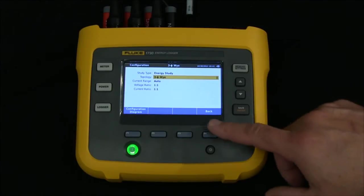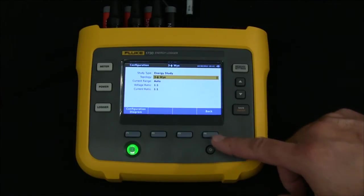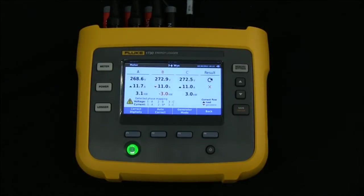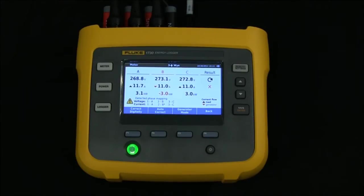Once it's set for what you're connected to, hit back, and then hit verify connection to see if you actually have a problem with any of your voltage or current leads. In this case, it is flagging that I do have a problem on phase B. So it's showing that I've got negative KW on phase B, and then down at the bottom, it's giving me some more information on why it thinks there's a problem.